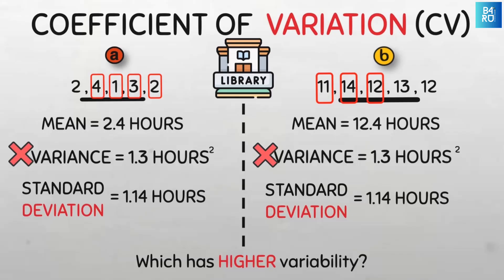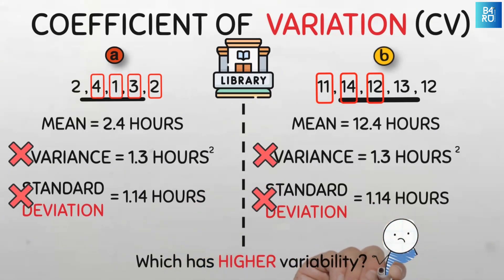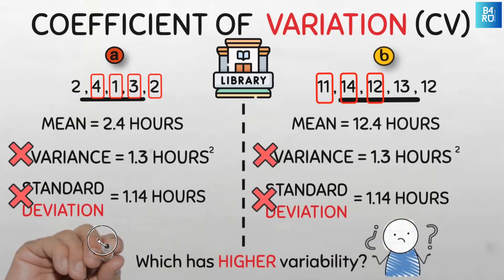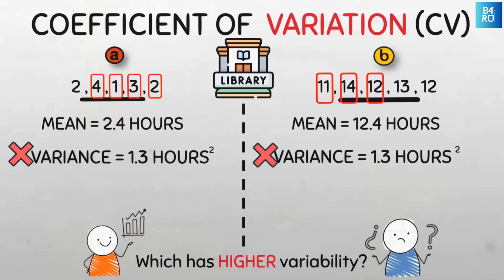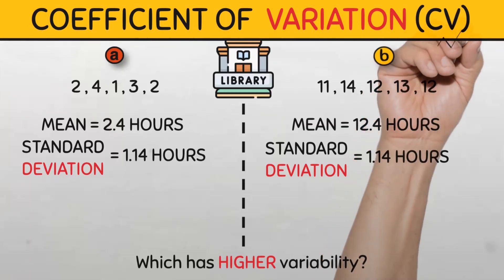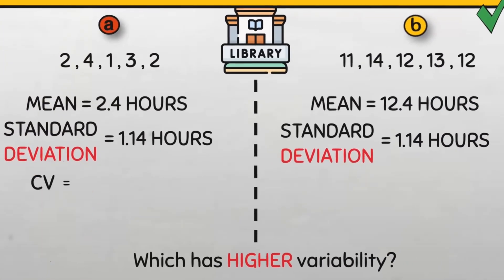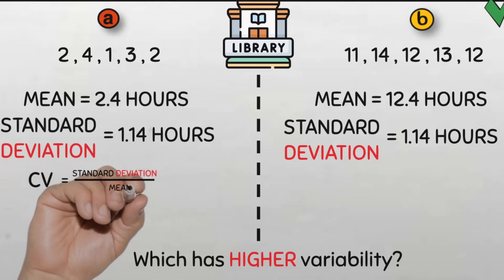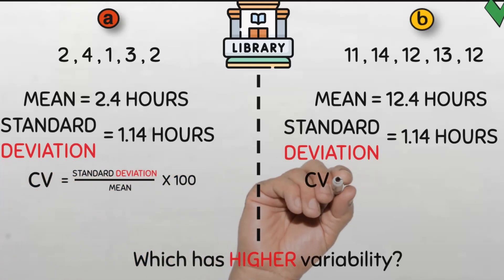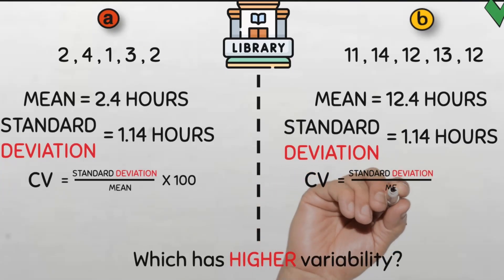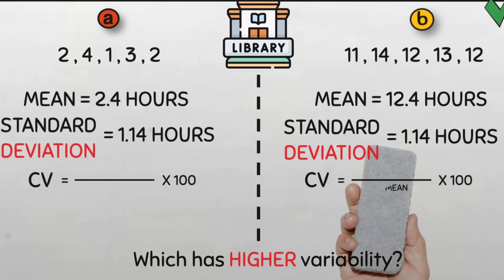So the variance and the standard deviation in and of themselves cannot help us to compare variability between two or more data sets. Because these only give the picture of absolute variability, but cannot give us a true picture of relative variability, and thus cannot be trusted when comparing the variability of different data sets. So what can we use when we want to compare the variability of two data sets? Enter the coefficient of variation.